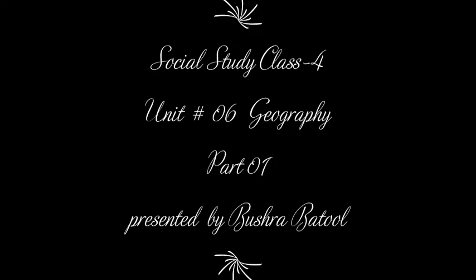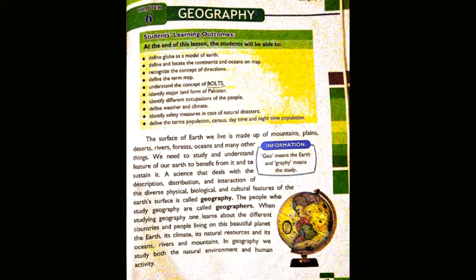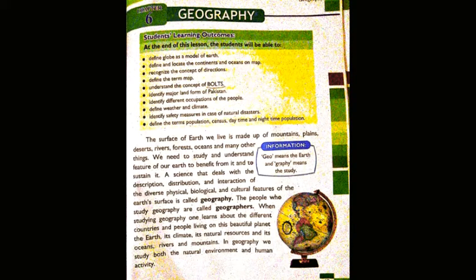I divide this unit into two parts. In the first part we are going to discuss all the natural and physical features of the earth. The surface of earth we live on is made up of mountains, plains, deserts, rivers, forests, oceans and many other things. We need to study and understand features of our earth to benefit from it and to sustain it. A science that deals with the description, distribution and interaction of the diverse physical, biological and cultural features of the earth's surface is called geography.